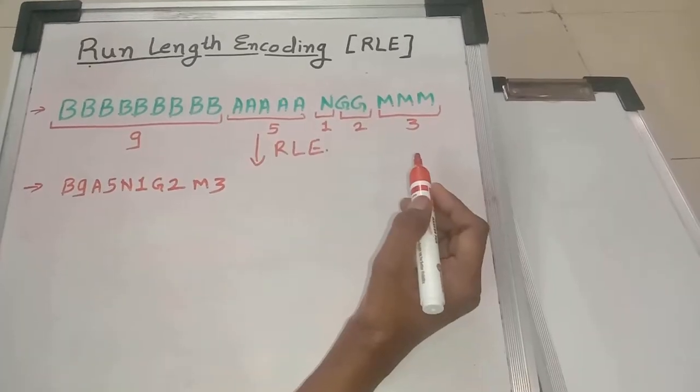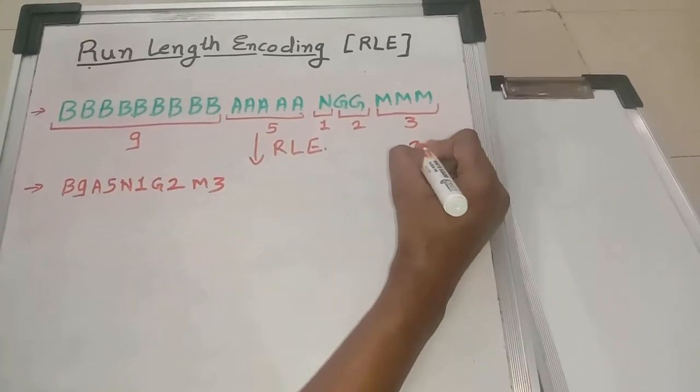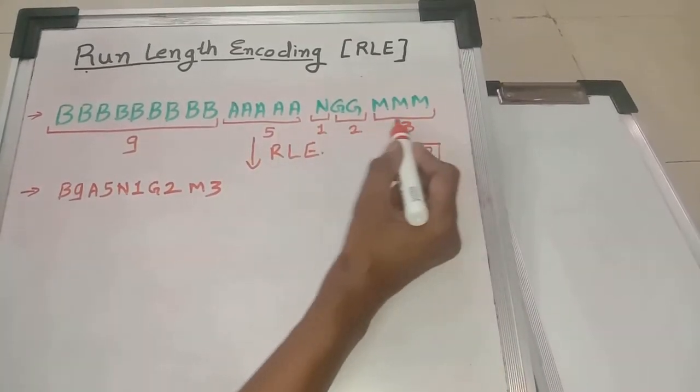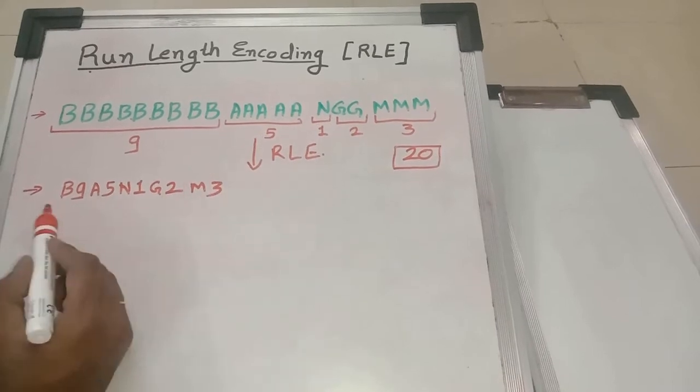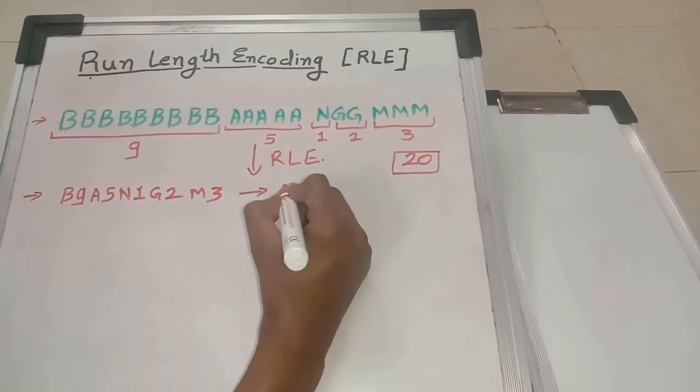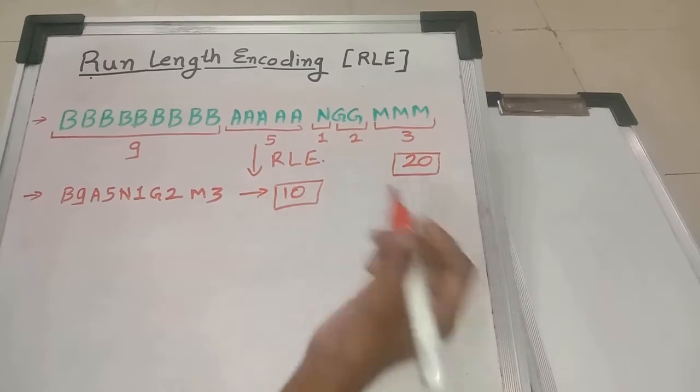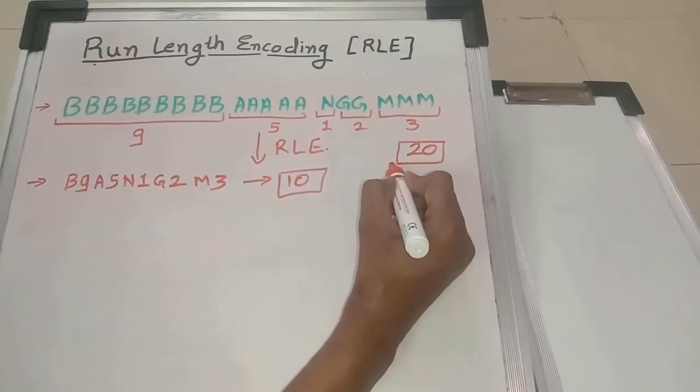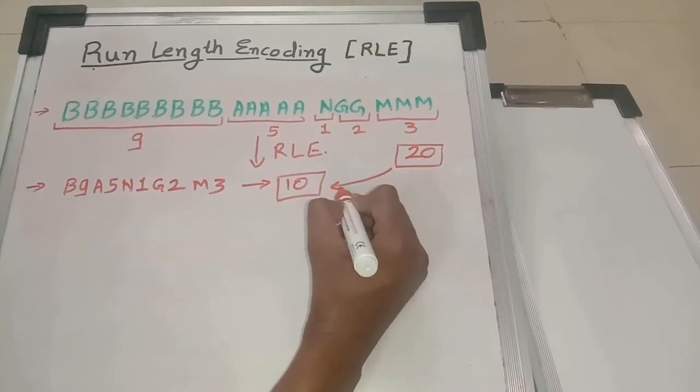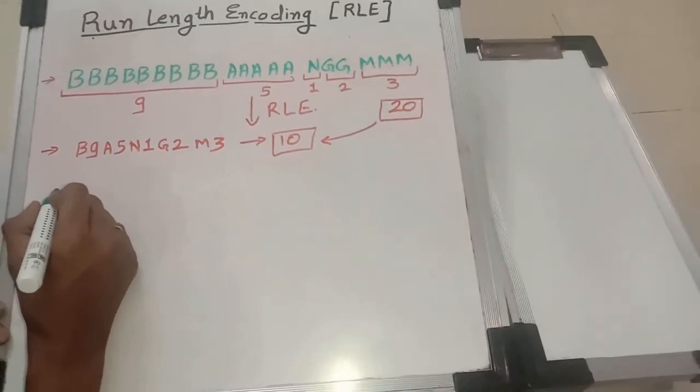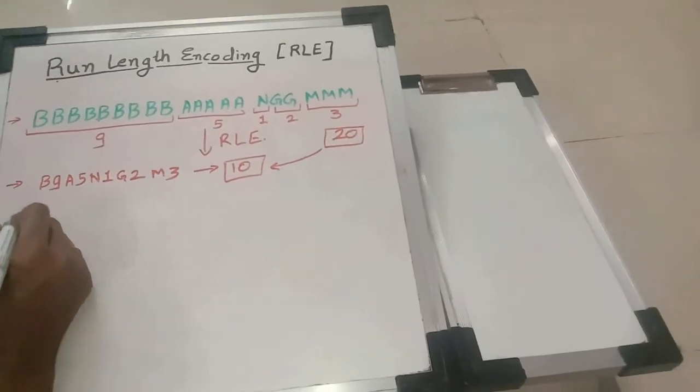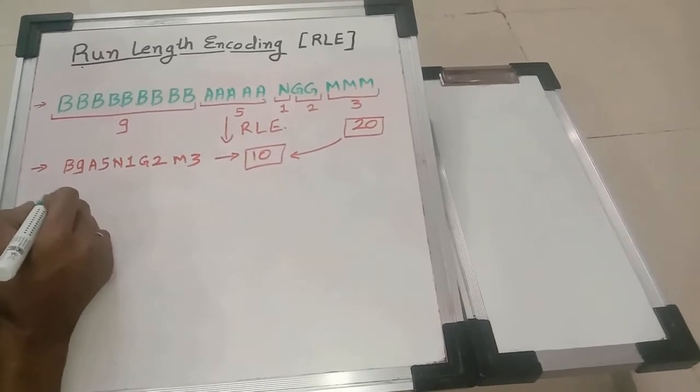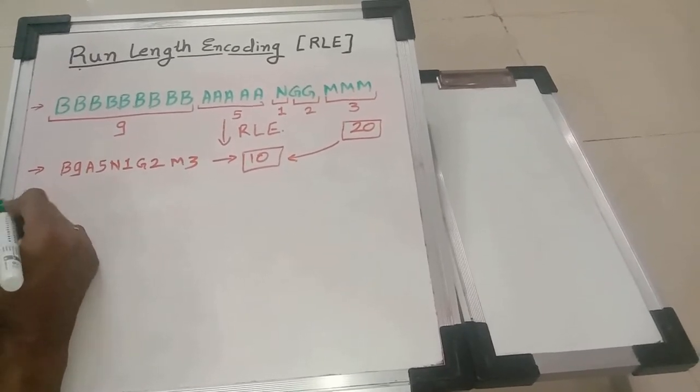So how many symbols are there? Total 20. These total symbols are 20. Instead of sending this, we will compress this to 10 symbols. Ultimately, by using RLE we are reducing the symbols from 20 to 10. We can see that using run length encoding we can compress the data with very simple method.